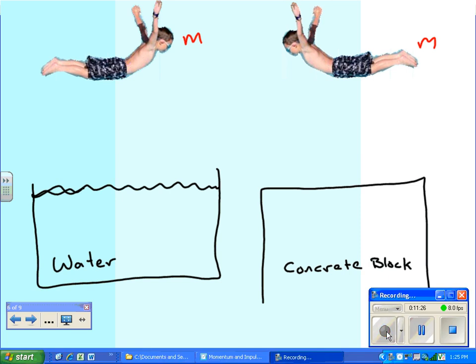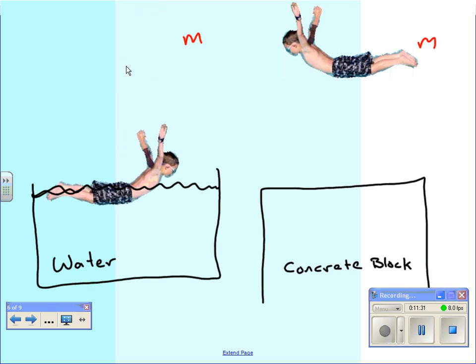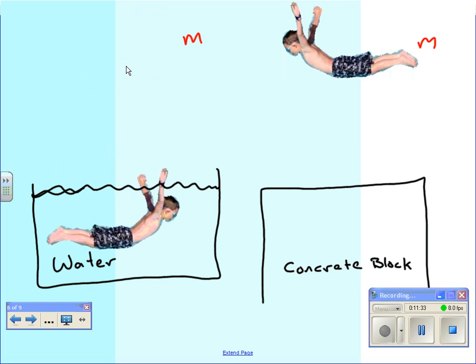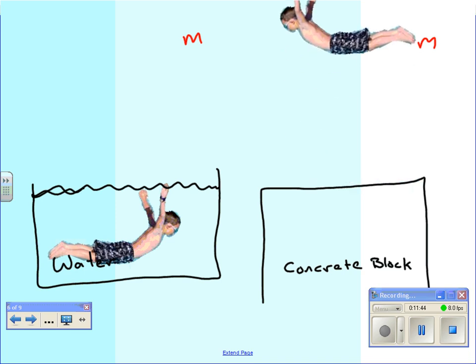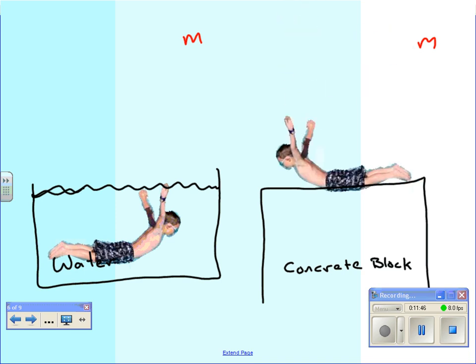So, let's watch our water diver first. We can imagine he falls, hits the surface, and then slowly comes to a stop down there. Our concrete diver falls and hits the surface at the same speed the other guy hit the water. But, man, he stops fast. Maybe he'll look like this. So, let's take a look when all is said and done. What's the same and what's different? So, it may seem strange to believe, but they actually both have the same change in momentum, the same delta P in that case.